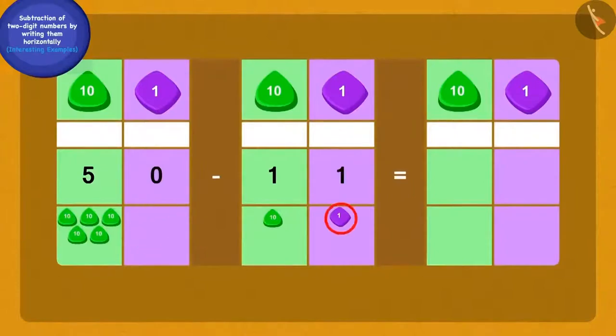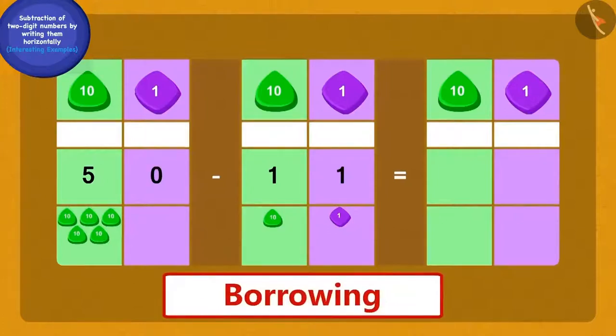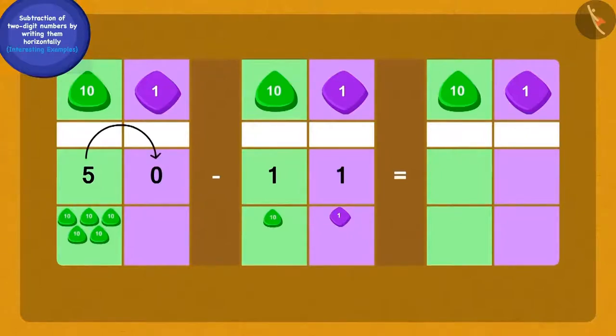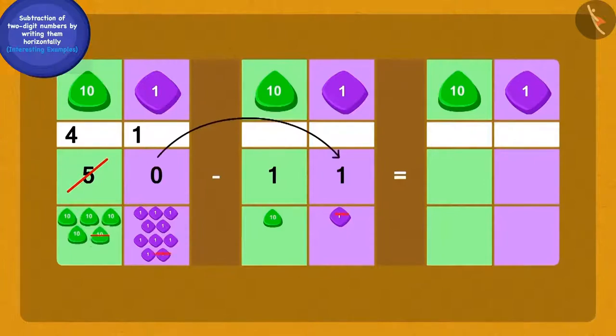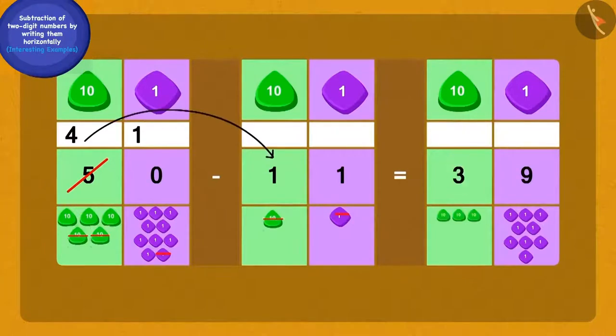Children, do you think this is possible? Let us see how Bablu solved it. Bablu took a paper and told Raju, here we have to use the borrowing process. We will borrow one 10 from five 10s of 50 and thus make 10 once. Because we borrowed one 10, we have four 10s left now. Children, can you solve this further? Yes, we will subtract one once from ten once and we will get nine once. And finally, if we remove one 10s from four 10s, we will get three 10s.